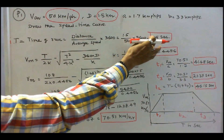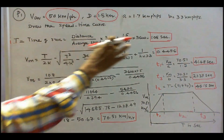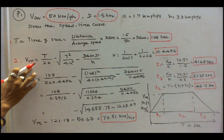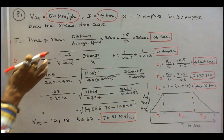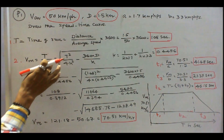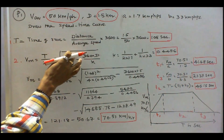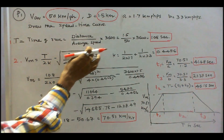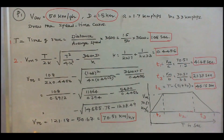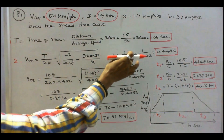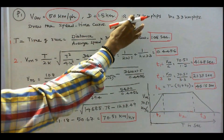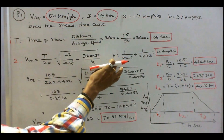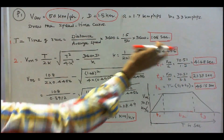Step 2: the formula for maximum speed vm equals T divided by 2k minus the square root of T squared over 4k squared minus 3600 times d divided by k, where k equals 1 over 2a plus 1 over 2b. With a equal to 1.7 and b equal to 3.3, therefore k equals 0.4456.